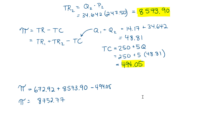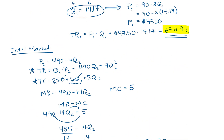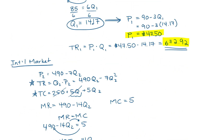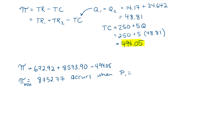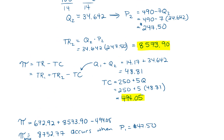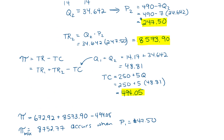This maximum profit value of 8,752.77 — I won't assign units since the problem doesn't specify them — occurs when P1 equals the optimal domestic price of 47.50 and P2 equals the optimal international price of 247.50. And there we have it: we've priced our domestic and international markets and found the maximum profit.